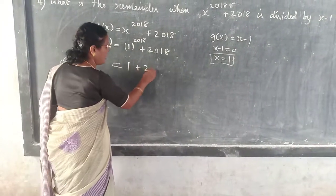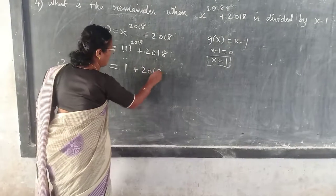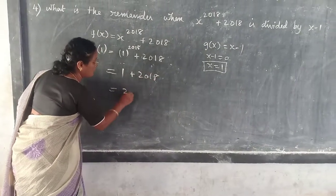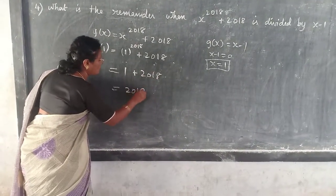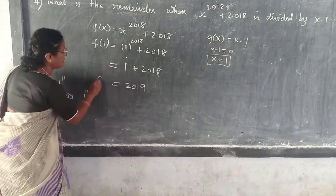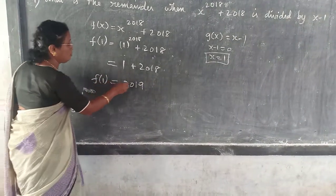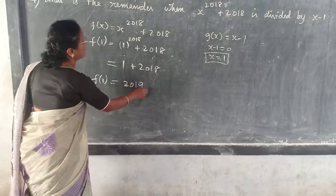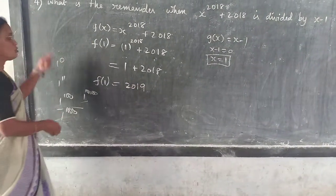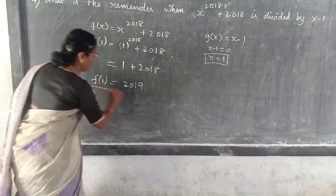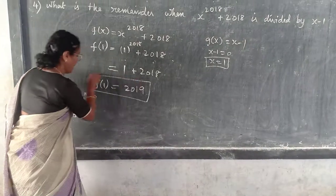So 1 plus 2018 — 2018 plus 1 is what? 2019. So f(1) is equal to 2019. Therefore, the remainder is 2019.